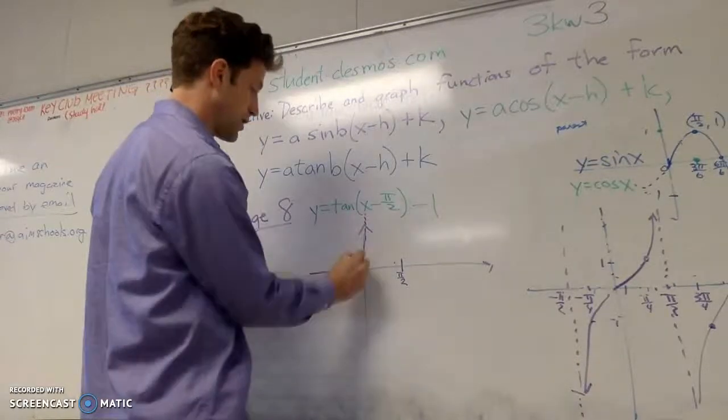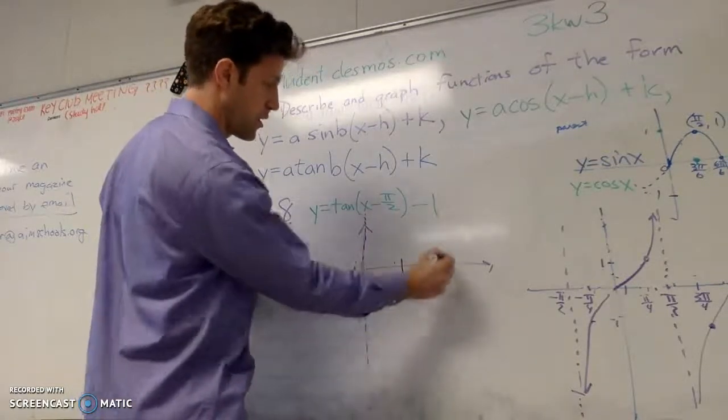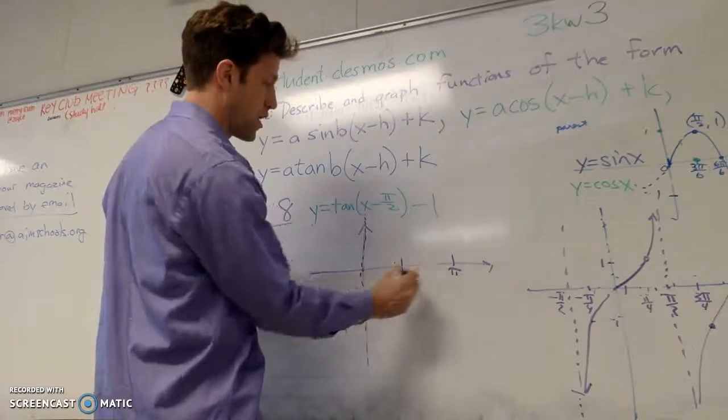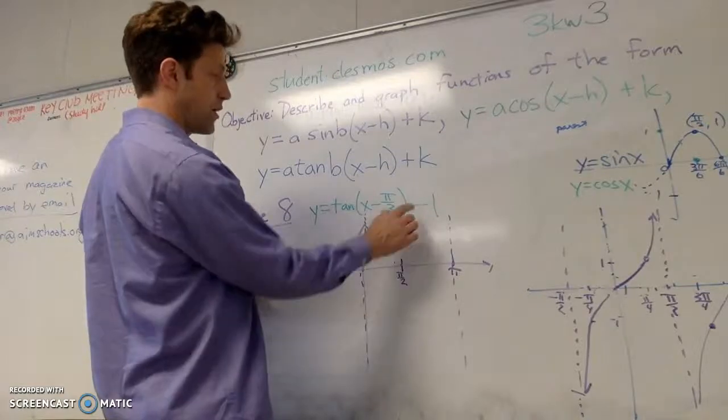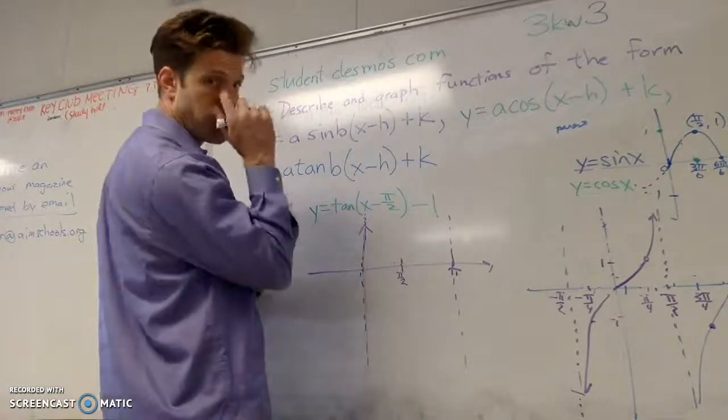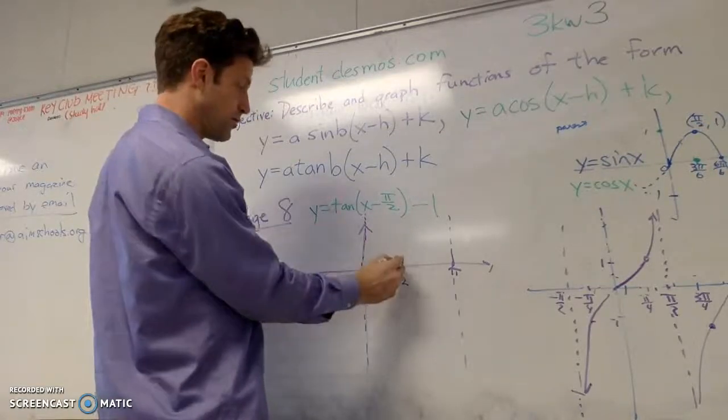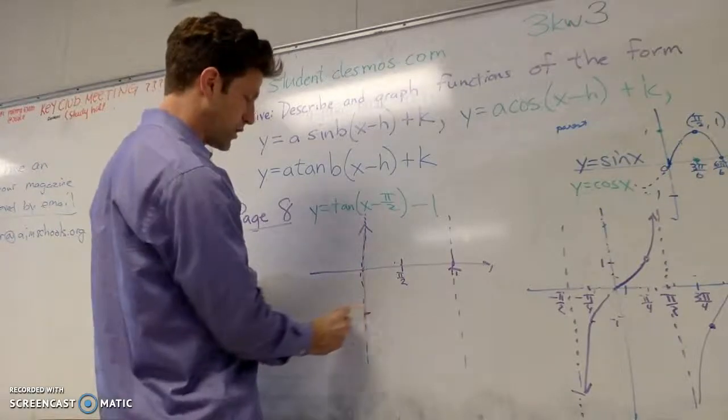So my asymptotes will be here, here, and my 0 will be here. But it won't be a 0, will it? It will be a negative 1. So the middle, I have a tan function of 0, but it moves down to negative 1. So negative 1 is my new 0.